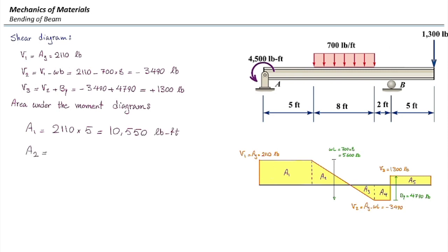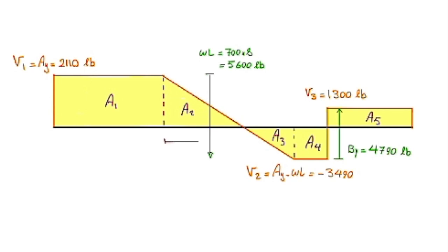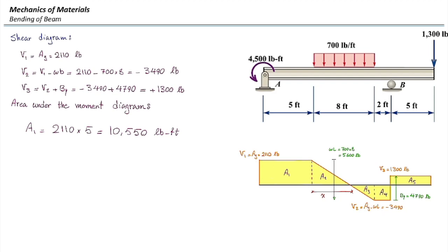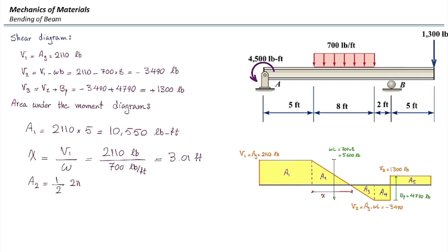If I want to determine how much is Area 2, I need to determine where is the intersection of this shear diagram with the horizontal axis. Let's call that intersection x. For determining x, knowing the slope of the line, we can divide the initial value by slope. V1 is 2110 pounds, and W is 700 pounds per feet, and that would give us 3.01 feet. Area 2 would be one-half of 2110 multiplied by x, which is 3.01.